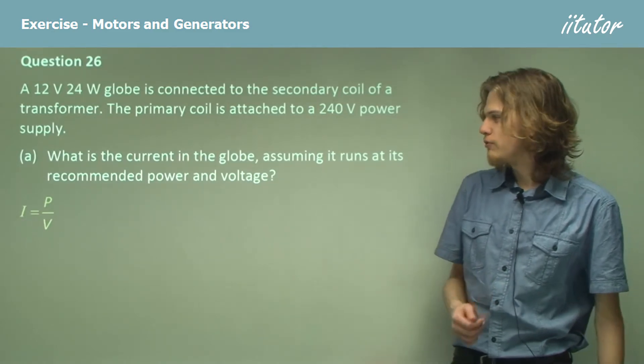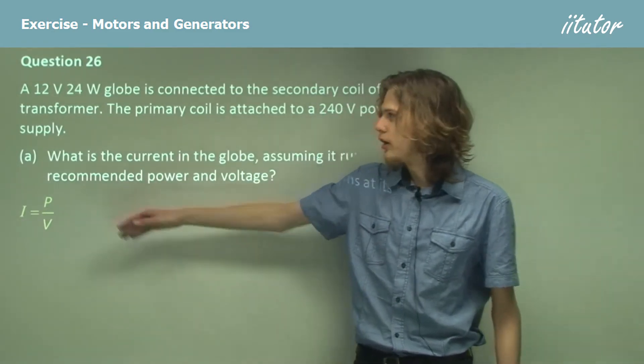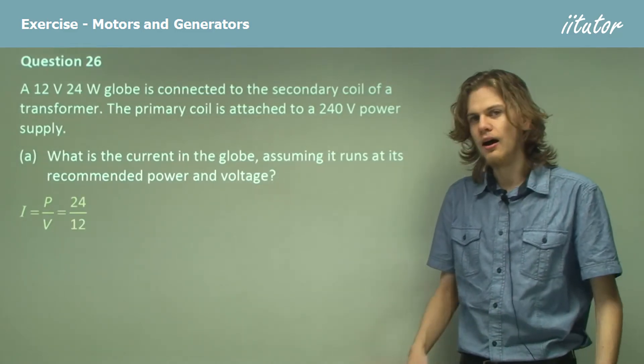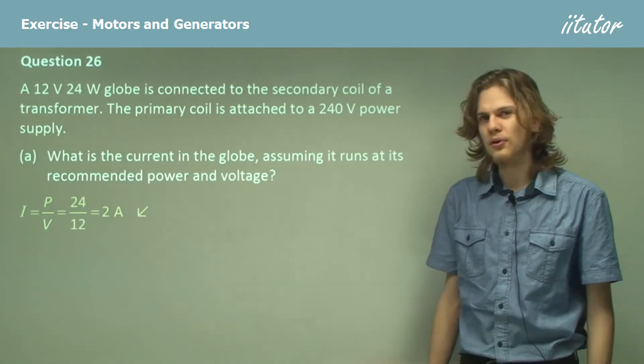So we take the 24 watts of power, we divide it by the 12 volts of voltage and that will of course evaluate to 2 amperes.